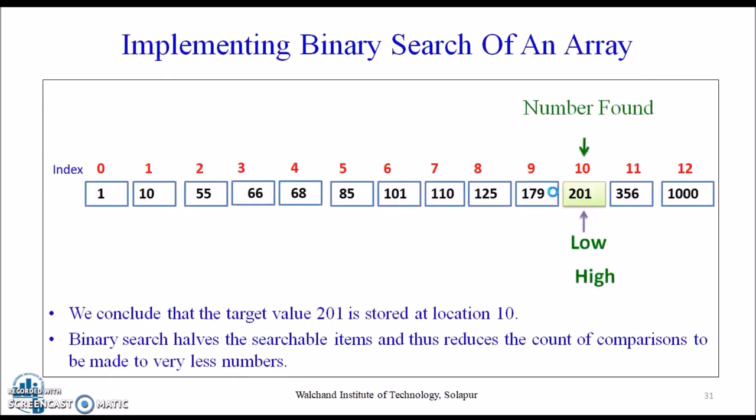That is binary search: it halves the searchable item and thus reduces the count of comparisons to be made to very less number. So we conclude that our target value is stored at location 10.